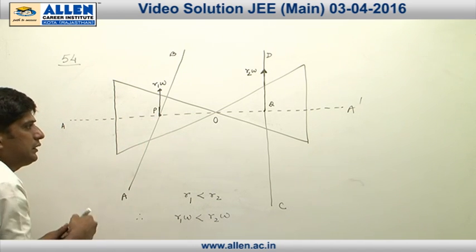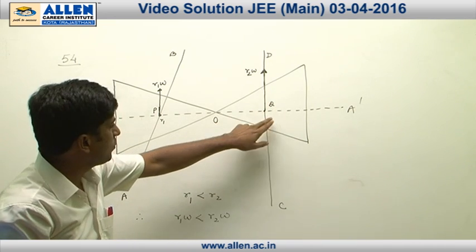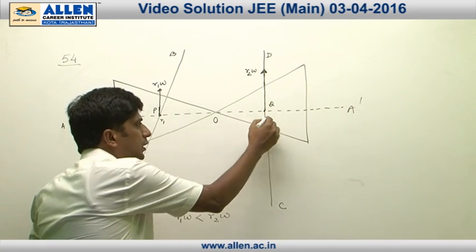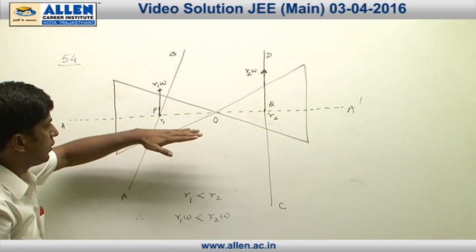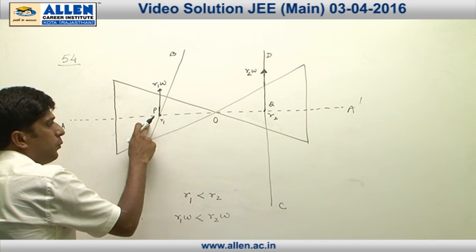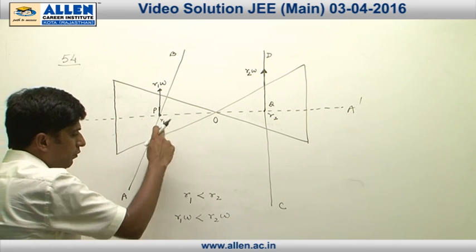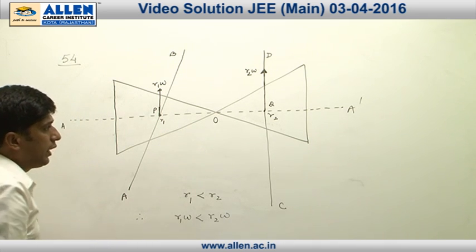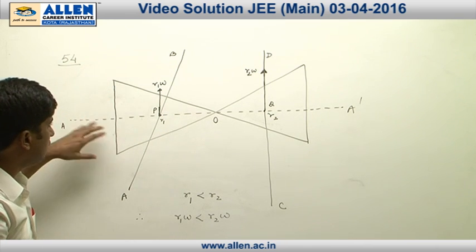Say distance of point P from the corresponding point of contact is r1, and distance of Q from the corresponding point of contact is r2. As the roller moves forward, distance of O from point P starts decreasing, due to which r1 will be less than r2.